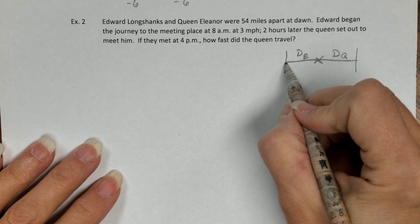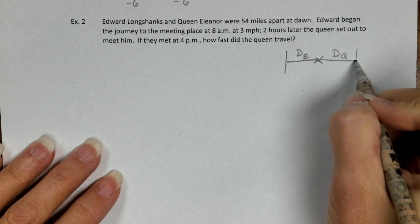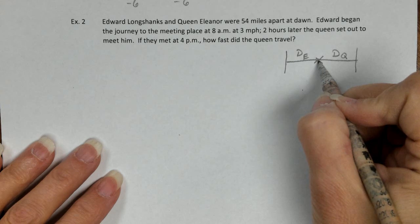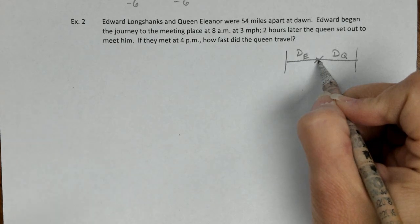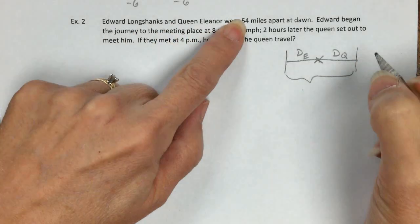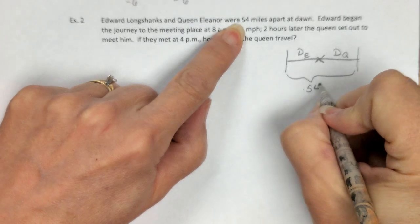So distance of Edward, distance of Queen. He started here, he's walking toward her. She started here, she's walking toward him. He doesn't say they're walking, but headed toward him. And they started out 54 miles apart. So those two distances will equal 54. Our diagram is slightly different than the first one, but the process is identical.